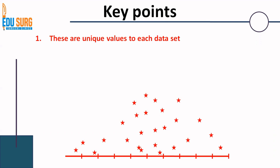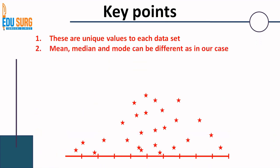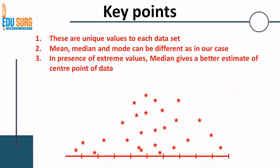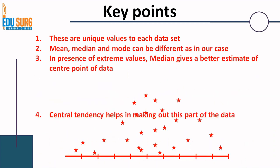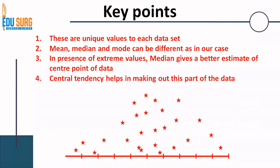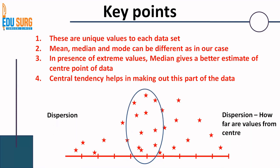Suppose you have a population and you take six different samples — each sample may have different mean, median, and mode, unique to that data set. Mean, median, and mode can be different from each other, and in the presence of extreme values, median gives a better estimate of the center point of data. Central tendency helps in making out the blue part of the data. We will see dispersion in upcoming videos and take descriptive statistics further.